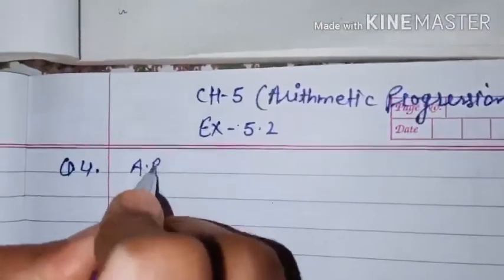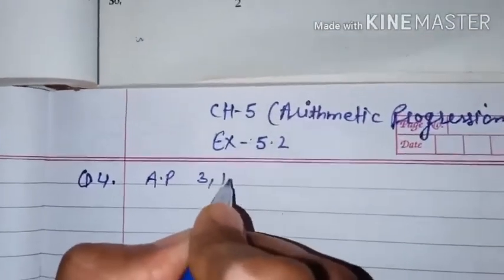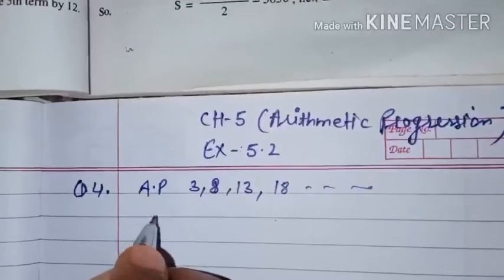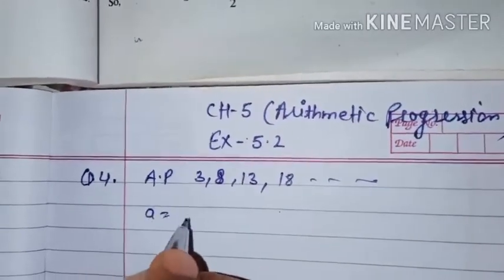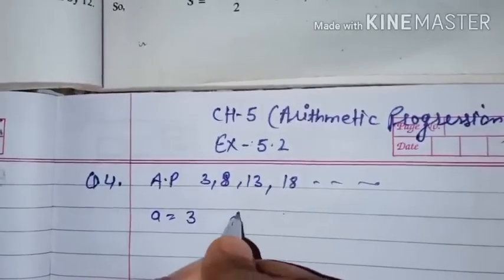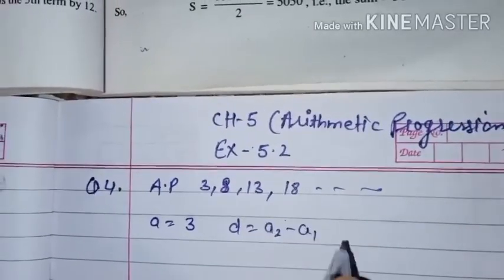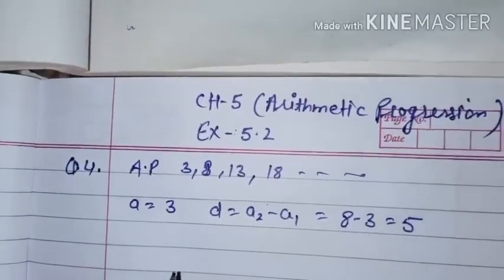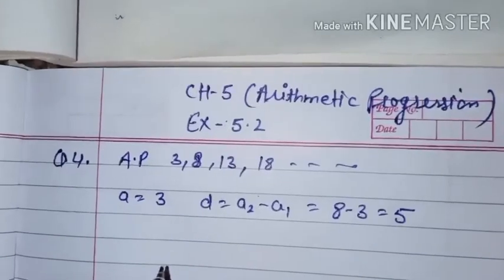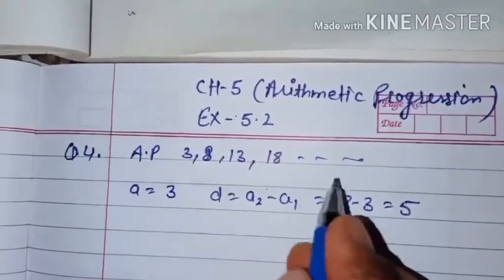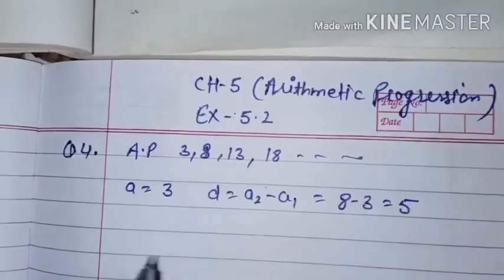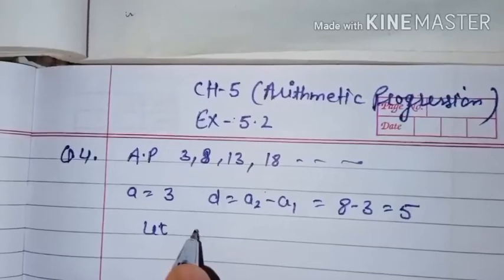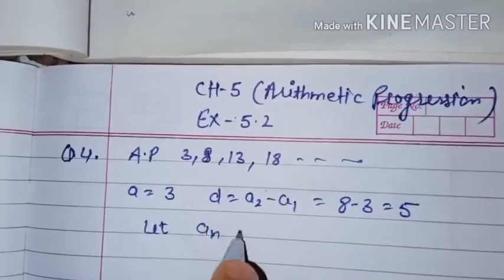The AP is given as 3, 8, 13, 18... From the AP, we get first term A equals 3, then D equals A2 minus A1, that is 8 minus 3, which is 5. Now we have to find at which position 78 appears in this AP. We let the nth term AN equal to 78.